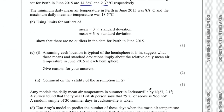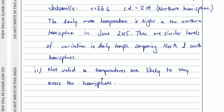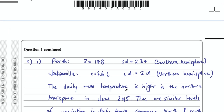Part 2 says comment on the validity of the assumption. We already said that assuming each location is typical of the hemisphere is a really big assumption — you can't just take measurements from one city and say the whole hemisphere is like that. I would say not valid, as temperatures are likely to vary across the hemispheres, and one location should not be used to make assumptions about the entire hemisphere. That was part C.